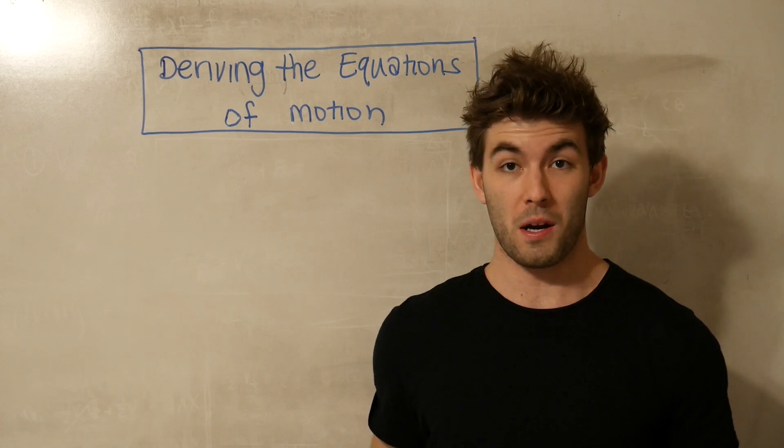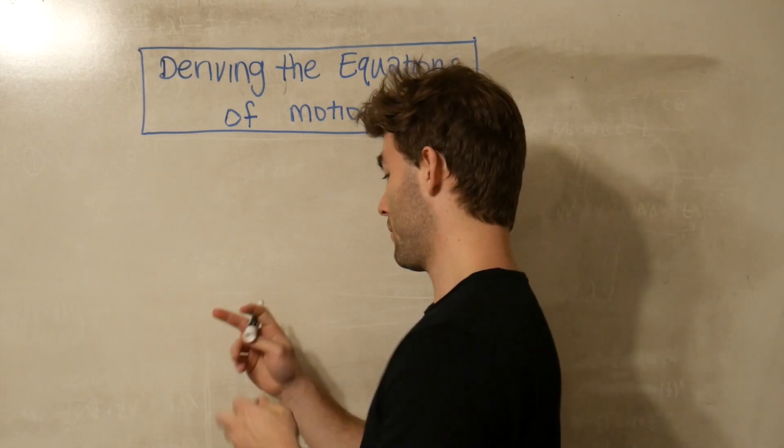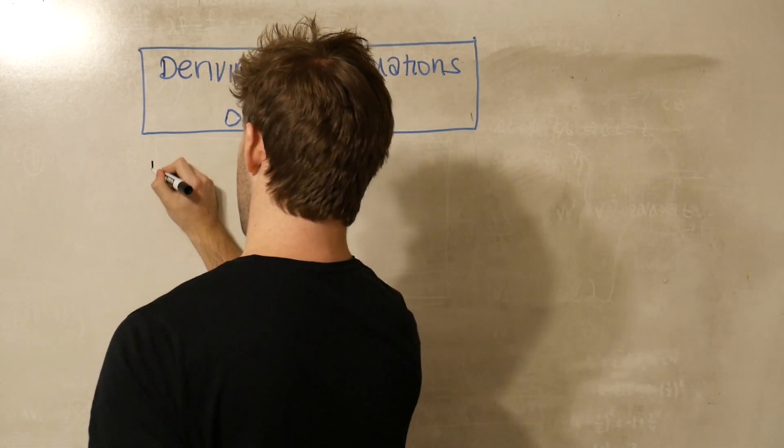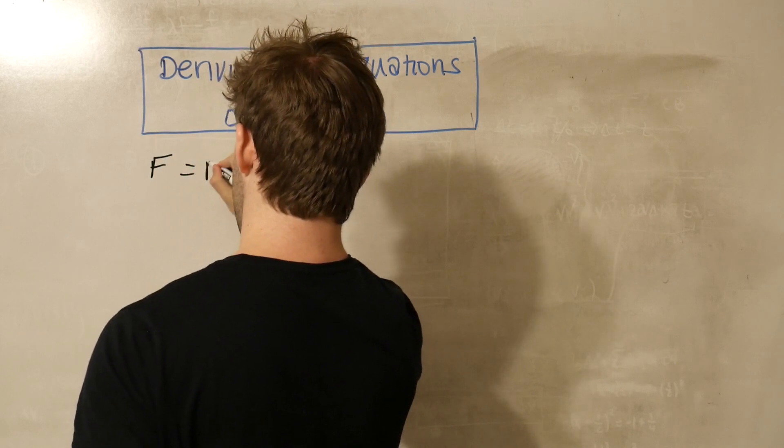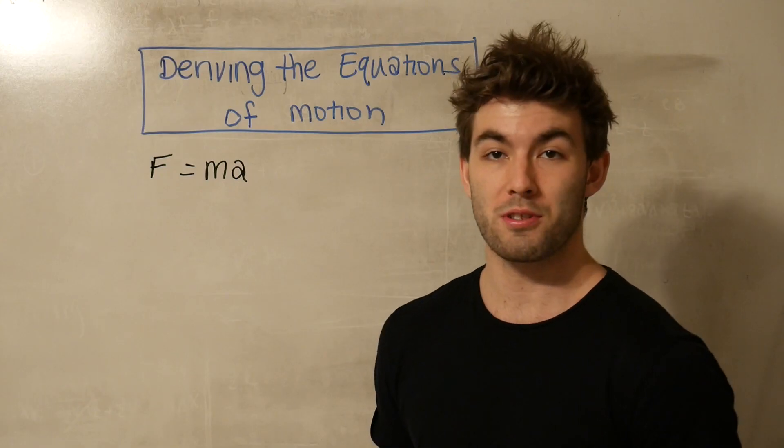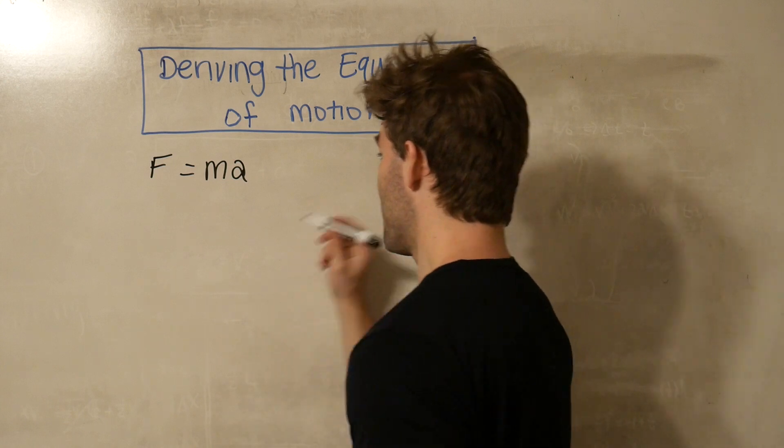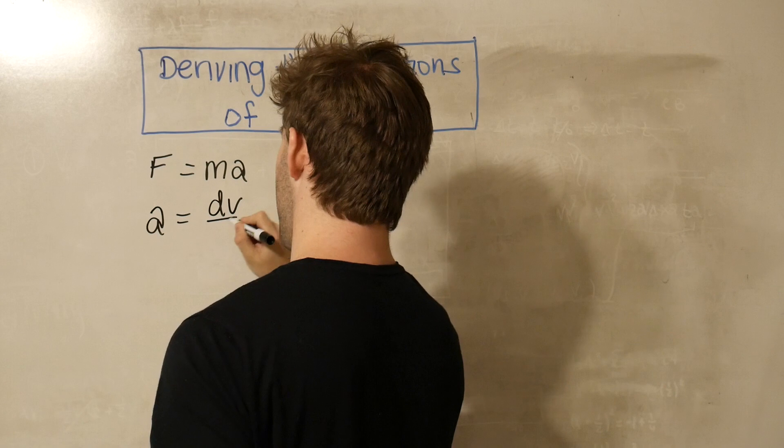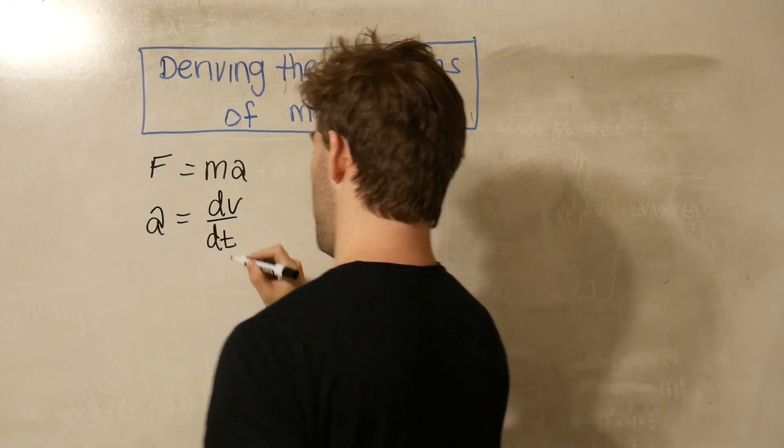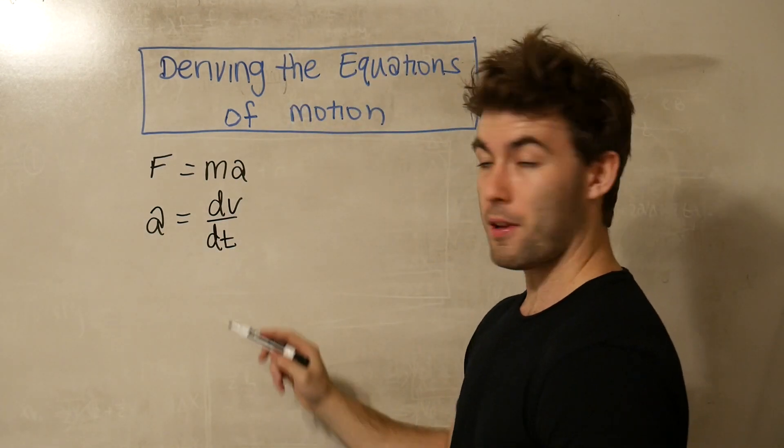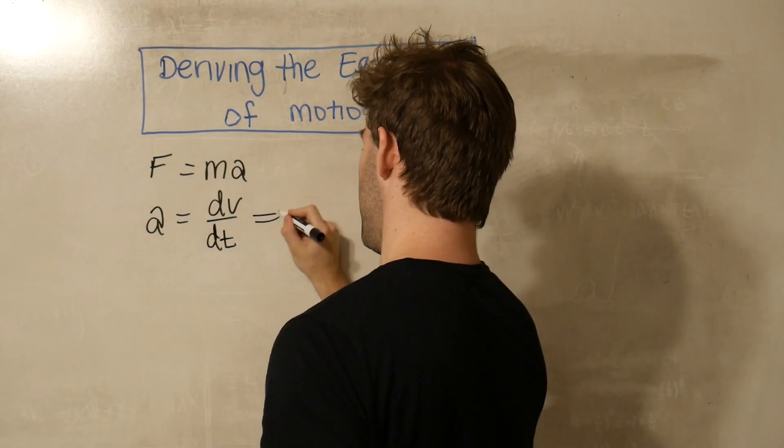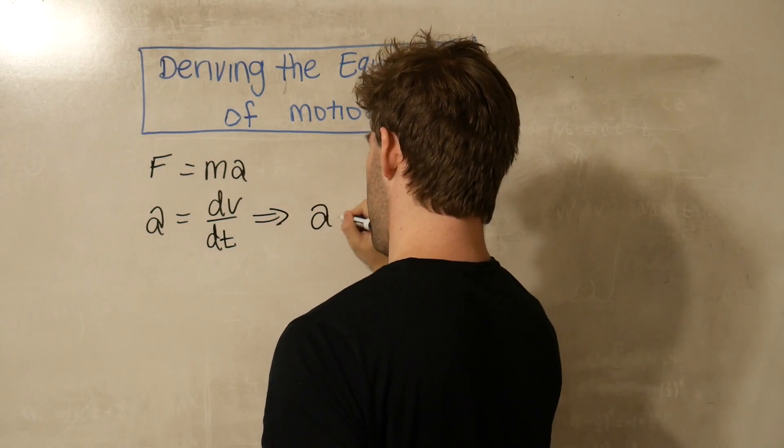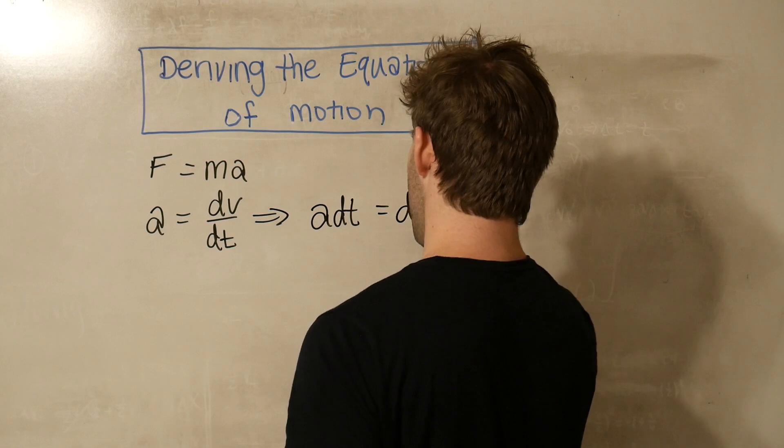So we're going to start off with an equation that everyone is familiar with, right here. Force equals mass times acceleration. Now, if we take the acceleration term and we define that as the time derivative of velocity, then we can multiply both sides by dt, and we get that a dt is equal to dv.